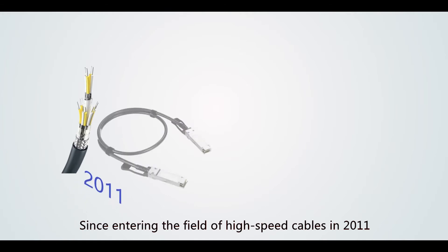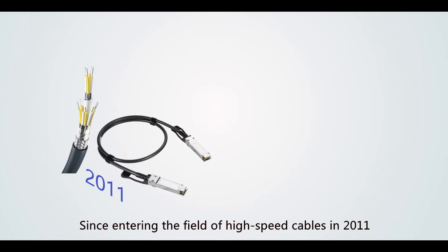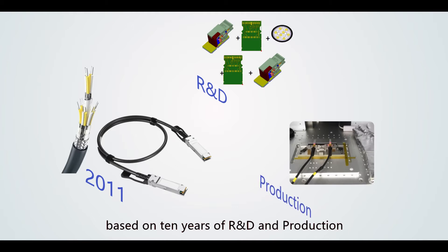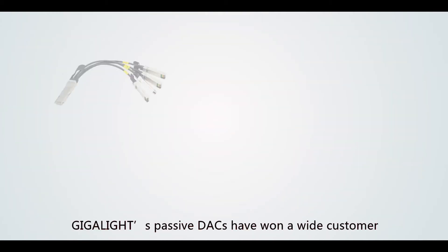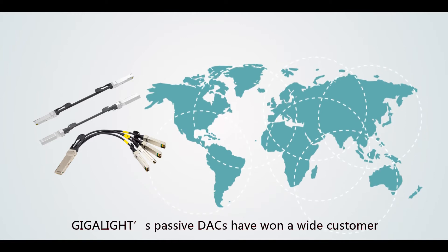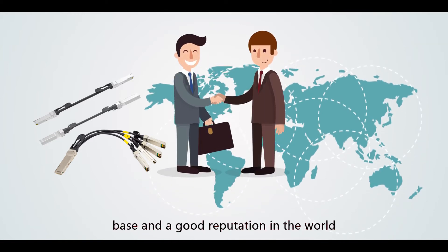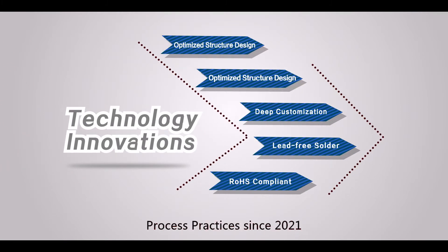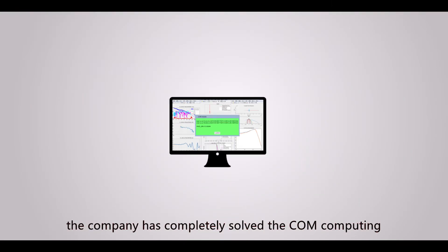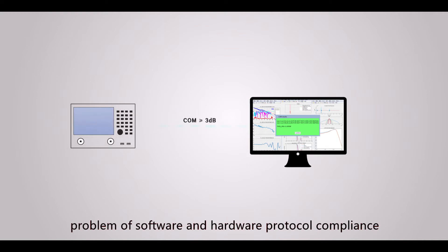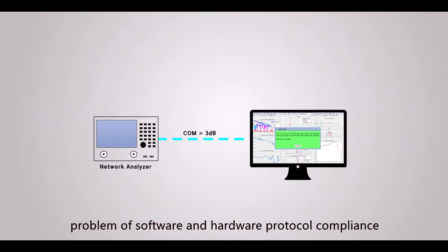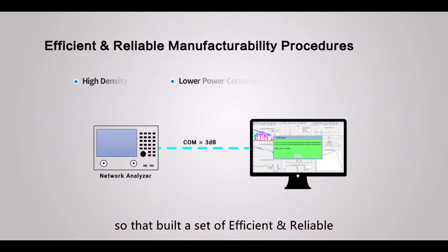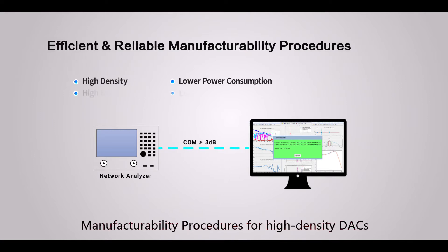Since entering the field of high-speed cables in 2011, based on 10 years of R&D and production, GigaLite's passive DACs have won a wide customer base and a good reputation worldwide. Through technology innovations and process practices since 2021, the company has completely solved the COM computing problem of software and hardware protocol compliance, and built a set of efficient and reliable manufacturability procedures for high-density DACs.